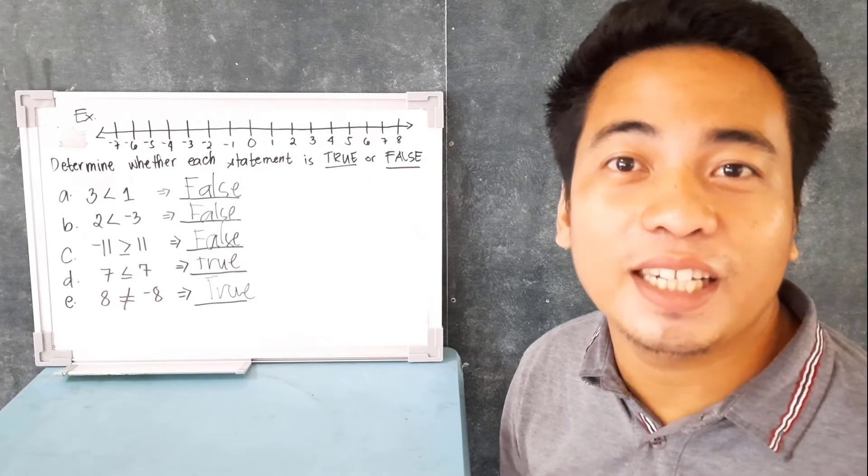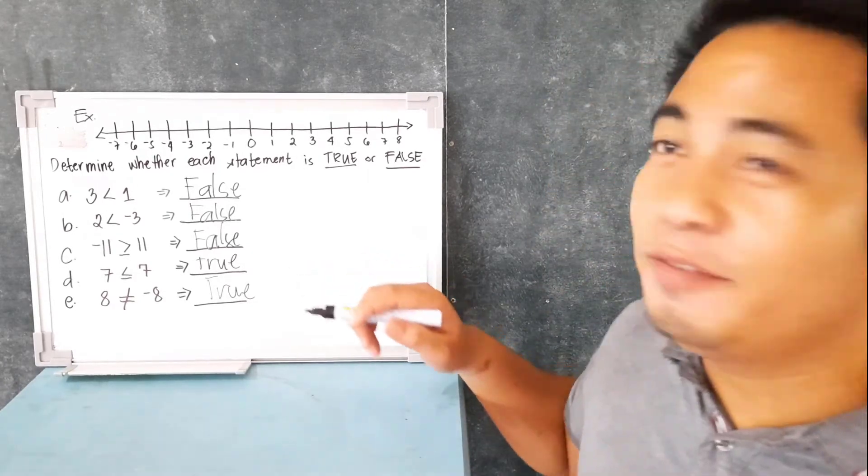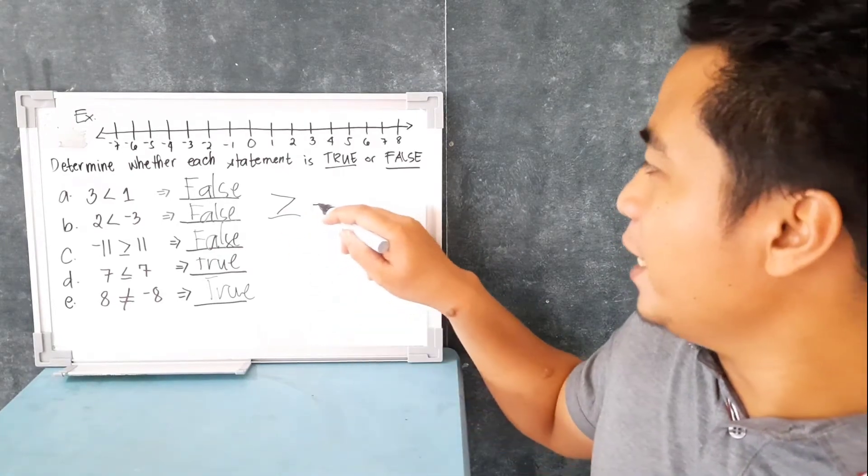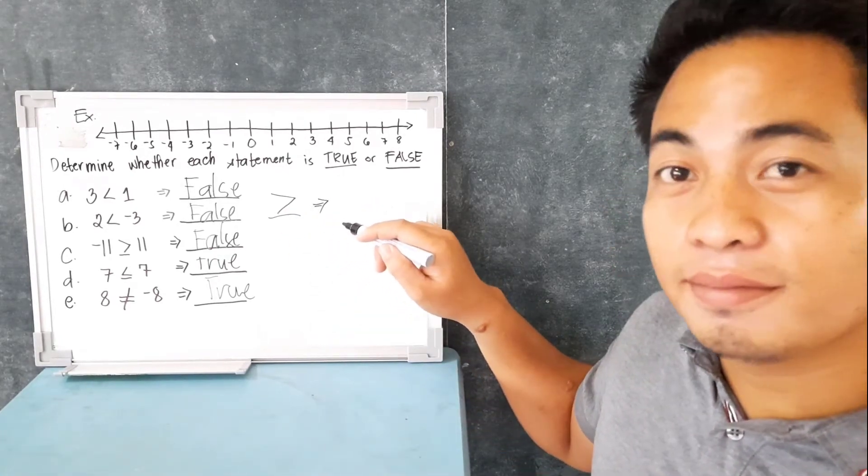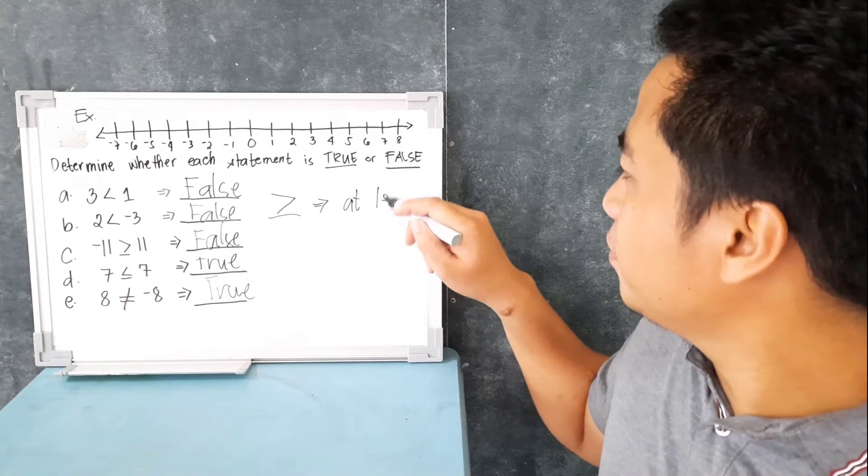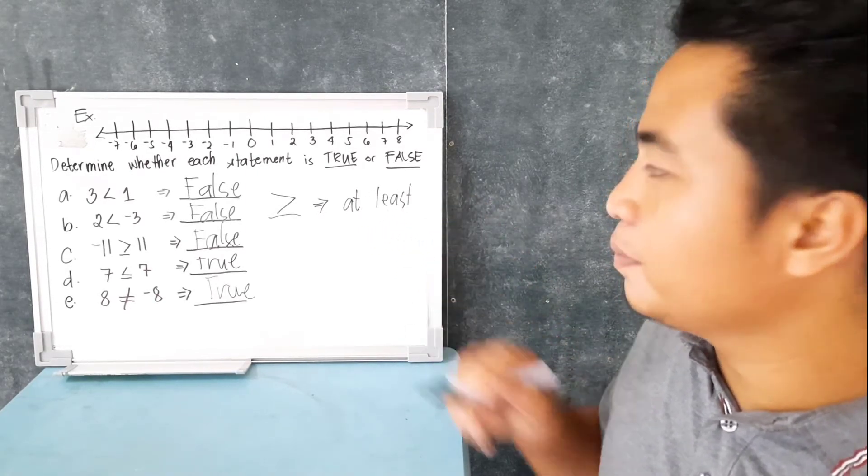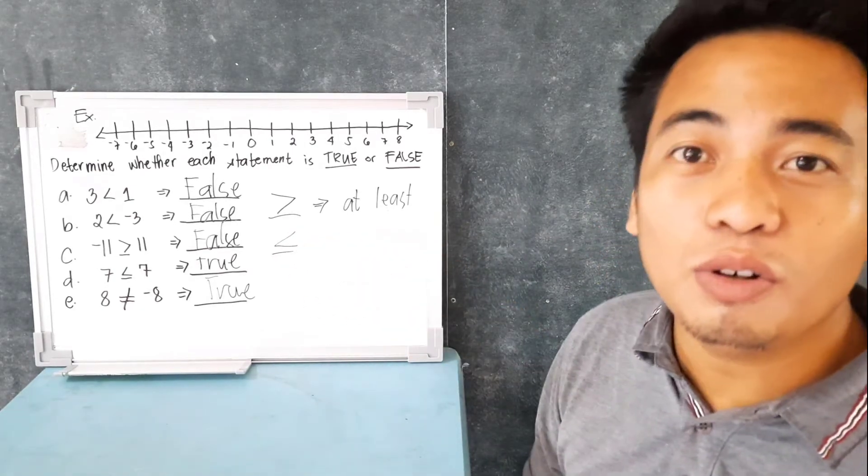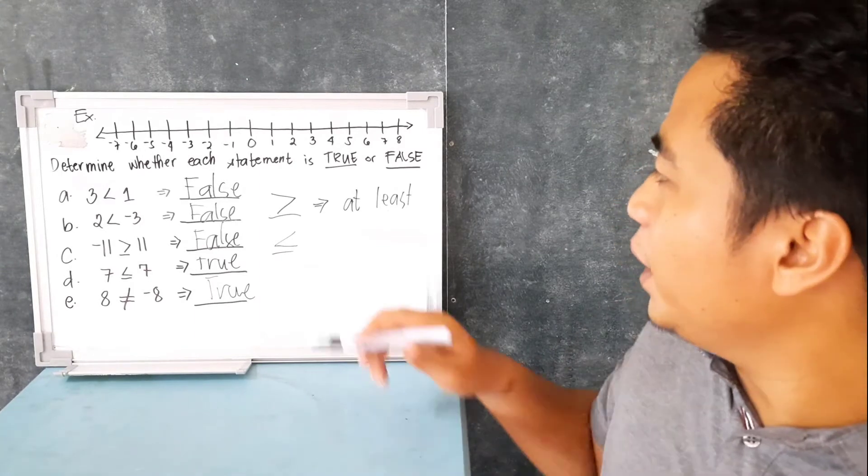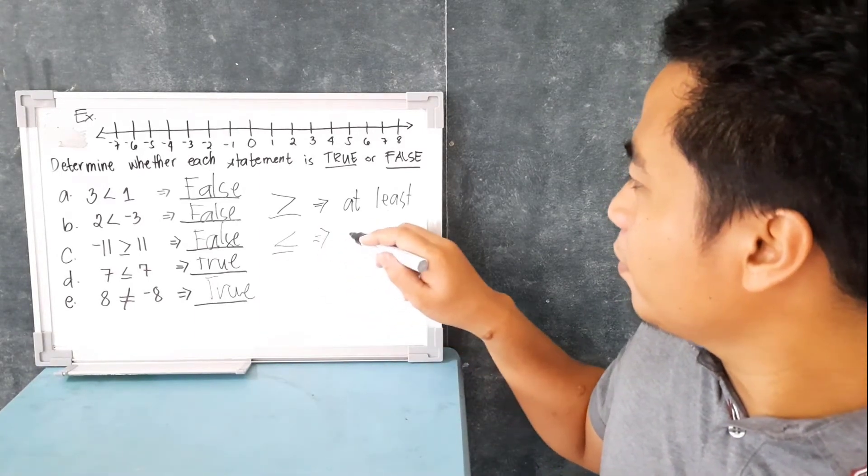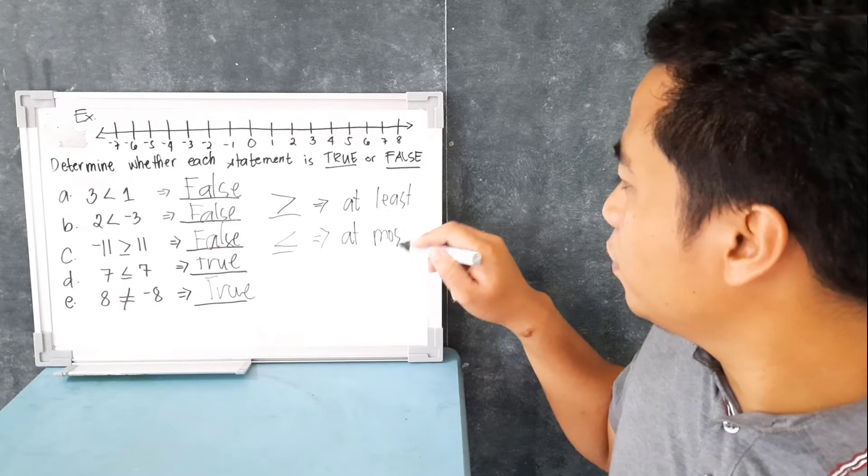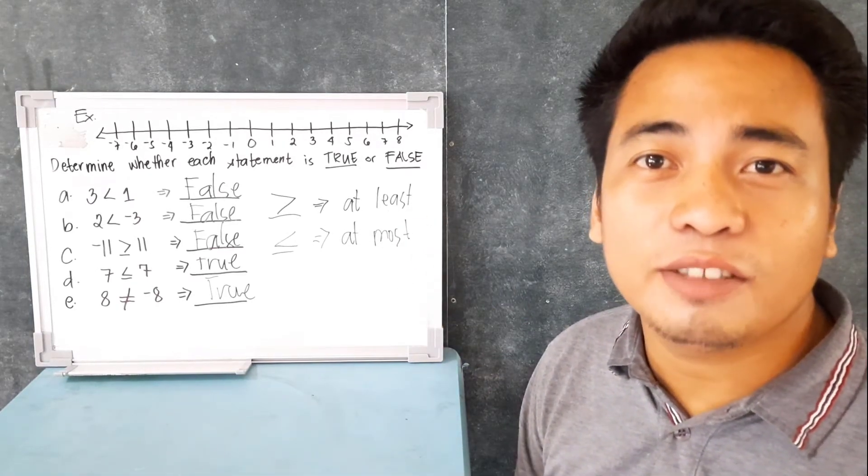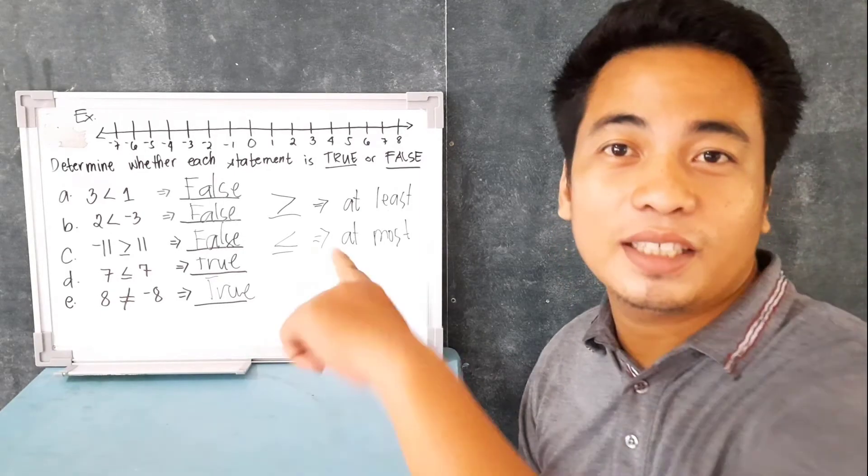Just a note for everyone in this video: if you could see greater than or equal to, it means at least. And if you could see less than or equal to, it means at most. Now there are mathematical situations where you'll be needing this one somewhere.